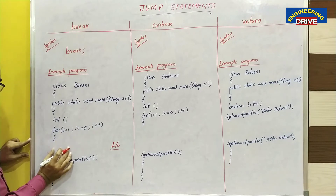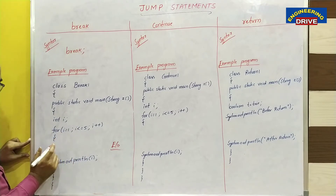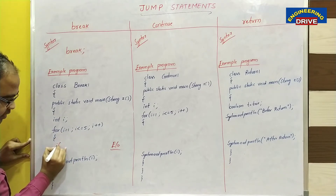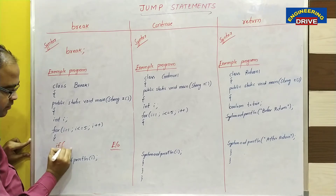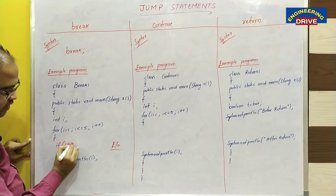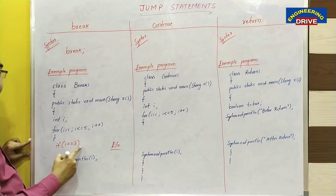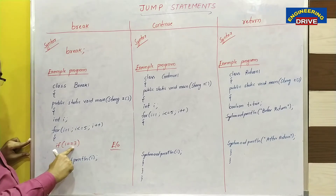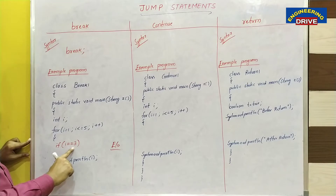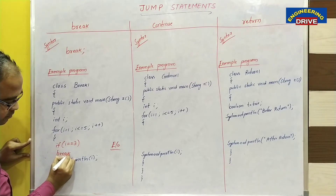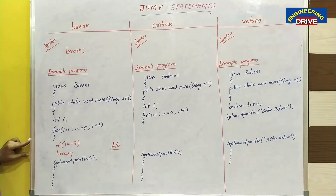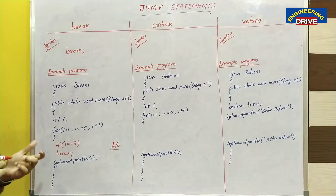I am making a small modification in this program. I am adding an if statement: if the value of i equals 3, then break. Now let us trace what output we will get. The starting value of i is 1, and 1 less than or equal to 5 — condition is true.